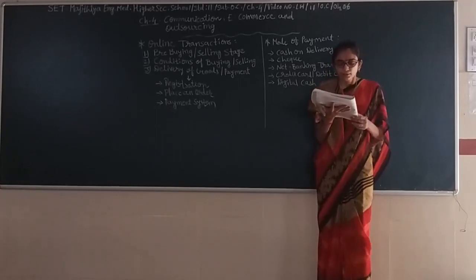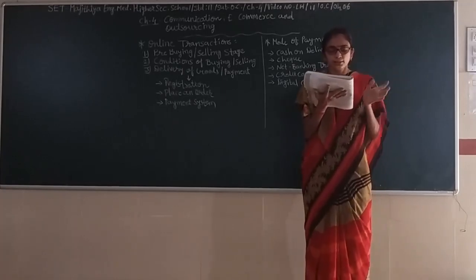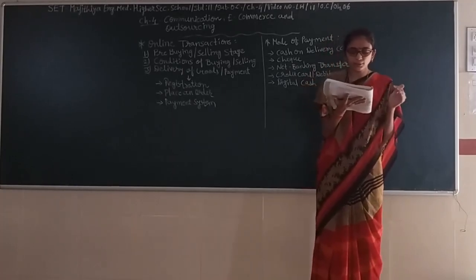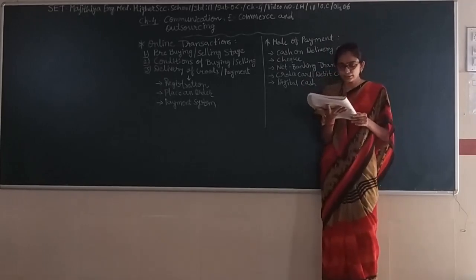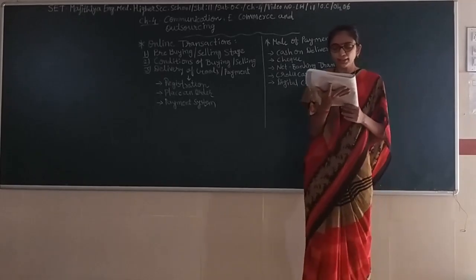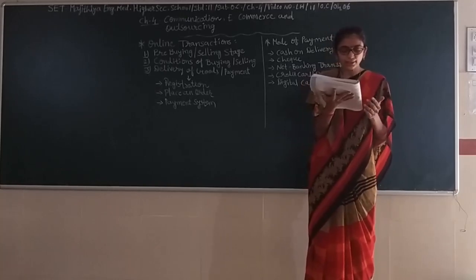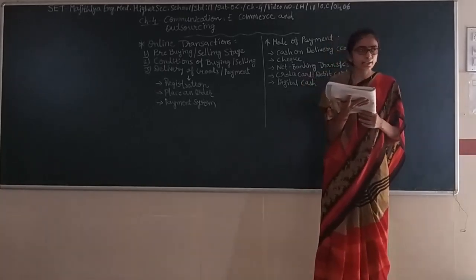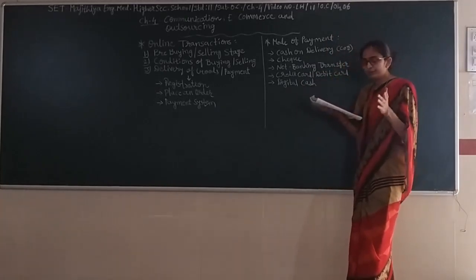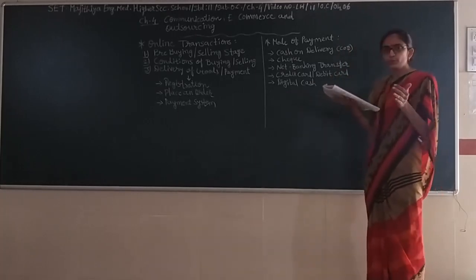After items in shopping cart, an option of payment can be selected. Then payment system. Payment can be made in different modes like cash, net banking transfer, credit card, debit card, digital cash, etc. Mode of payment can be found in online shopping.